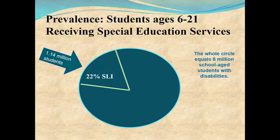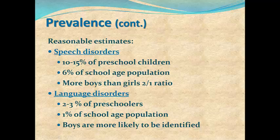Prevalence: Among students ages 6 to 21 receiving special education services, the whole circle equals 6 million school-age students with disabilities. 22% of those students have SLI, Speech and Language Impairments, which equals 1.14 million students. Reasonable estimates indicate speech disorders affect 10 to 15% of preschool children and 6% of the school-age population, with more boys than girls at a 2 to 1 ratio.